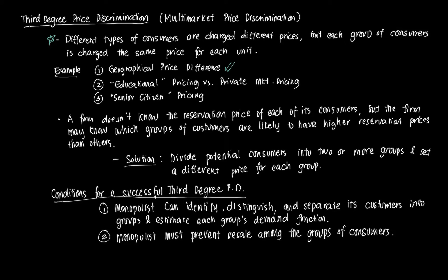Some companies have special pricing for education — schools and universities receive special prices compared to private or corporate institutions that can afford to pay more. And of course, the most common example is senior citizen pricing. Senior citizens receive discounts in groceries, essential goods, and dining across many industries, given a lower fee because they're retired and rely more on savings.